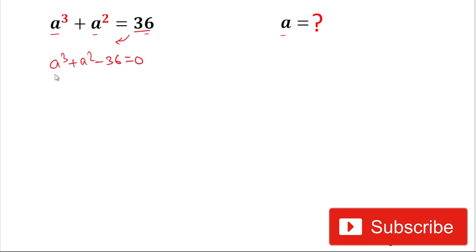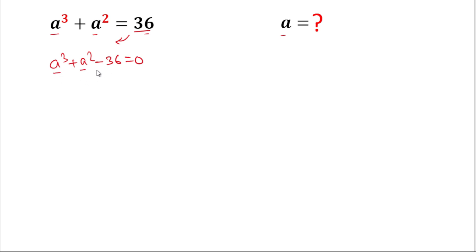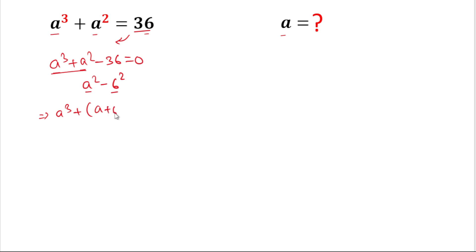For further solutions, we could take a² common from the first two terms, but after that we'd have no useful value to work with, so we won't do that. Alternatively, we can write 36 as 6², giving us a² - b² form: (a+6)(a-6). However, we cannot form any useful solutions from these expressions either, so we won't take this approach.